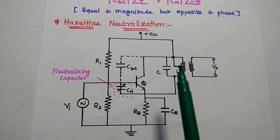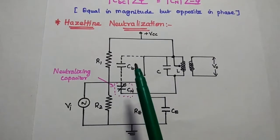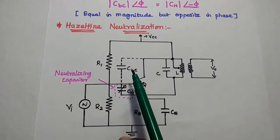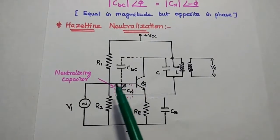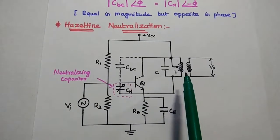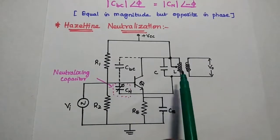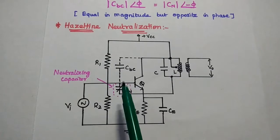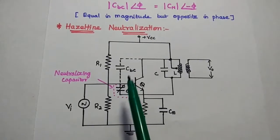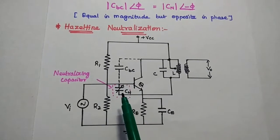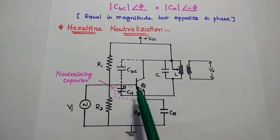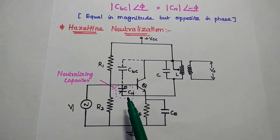The first method is Hazeldyne neutralization. In this method, the undesired effect of the collector-to-base interjunction capacitance is neutralized by introducing a variable external neutralizing capacitor between the primary winding of the output side and the base. It cancels the effect of CBC because its amplitude is equal to CBC but the phase is out of phase. By properly selecting the value of Cn, we can get exact neutralization.